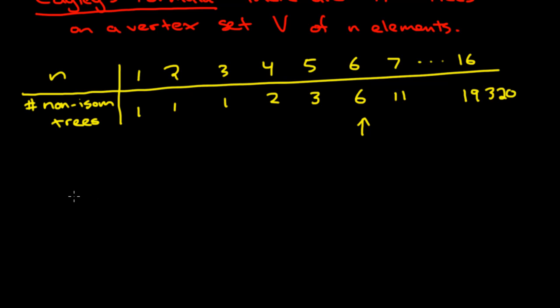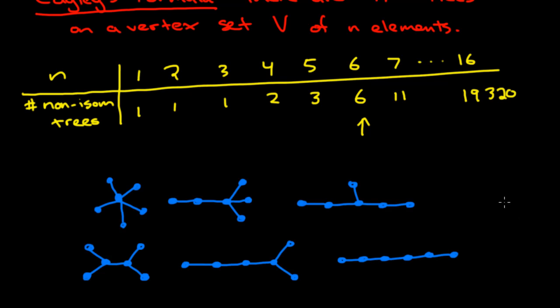All right, so here they are. These are the six non-isomorphic trees of order six. And in fact, if you were to try to draw a connected graph on six vertices that has no cycle, you are going to get one of these six drawings. Of course, your drawing may look slightly different, but upon inspection, you'll find out that it's isomorphic to one of these six drawings.